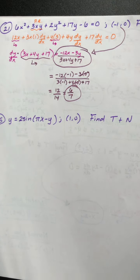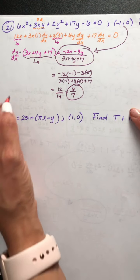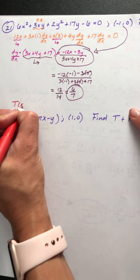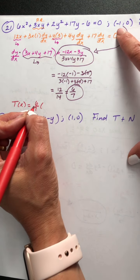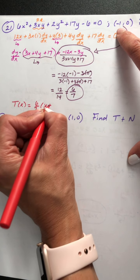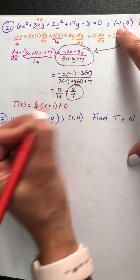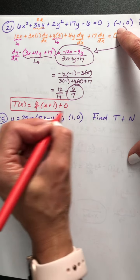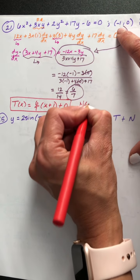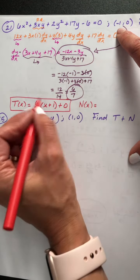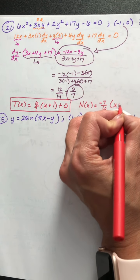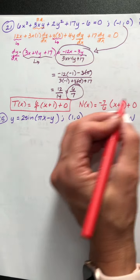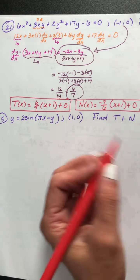Now we write the equations. t of x equals 6 sevenths times (x plus 1) plus 0. The normal line: n of x equals the opposite reciprocal of 6 sevenths, which is negative 7 sixths, times (x plus 1) plus 0.